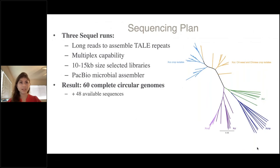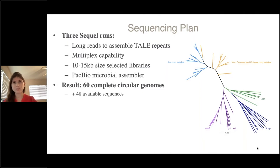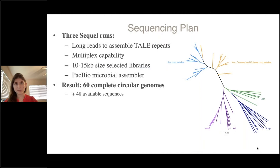We found multiple disease groupings where sets of strains would cause a particular type of disease on a certain group of host plants. From this group, we chose to sequence a set of 60 Xanthomonas campestris strains representing all the different disease phenotypes and host ranges that we observed. We completed long-read PacBio sequencing on our 60 strains using 10 to 15 kilobase size-selected libraries, and were able to multiplex up to 42 strains at a time. The genomes assembled nicely, including their plasmids, using the PacBio microbial assembler, resulting in all 60 genomes being circular and complete following sequencing.